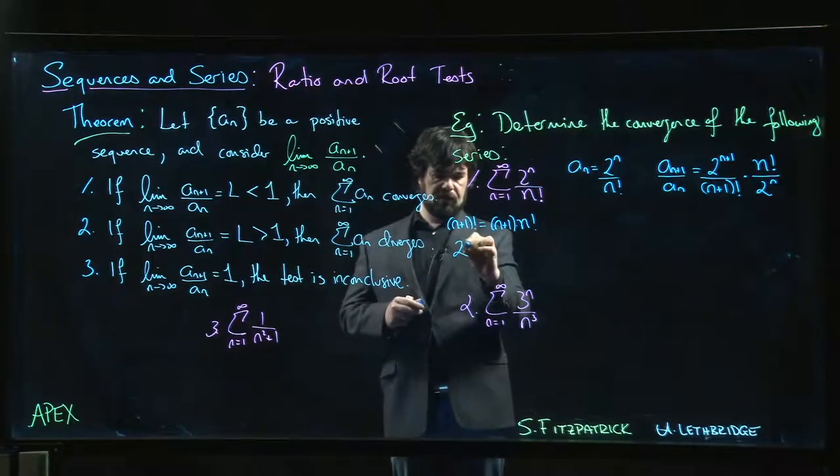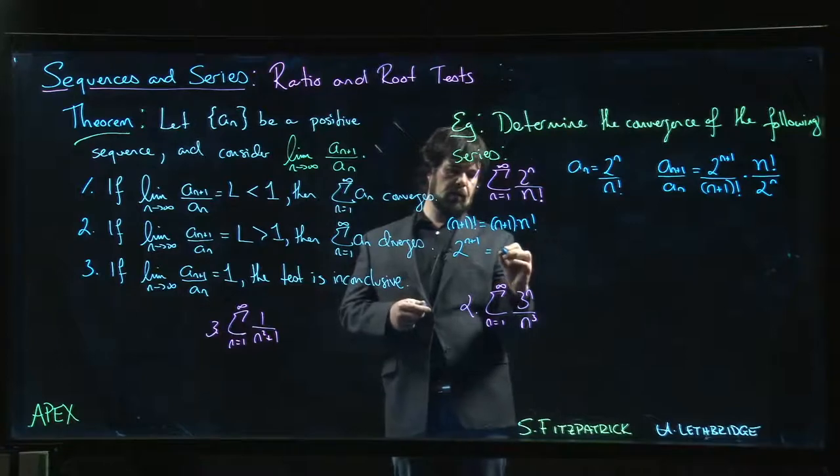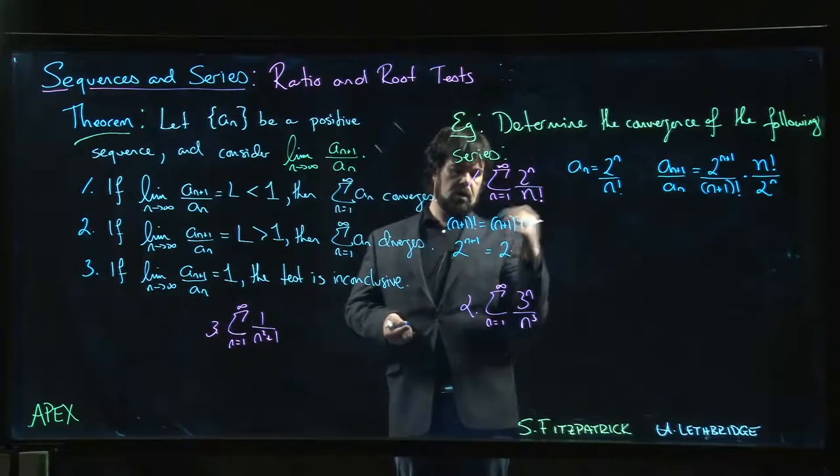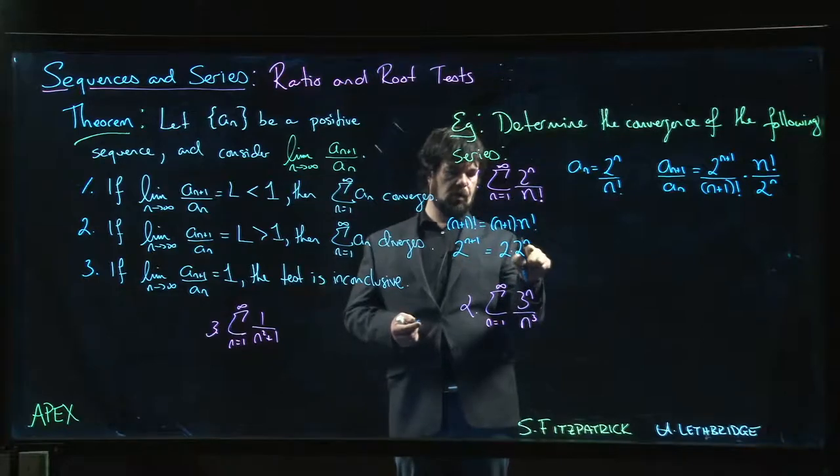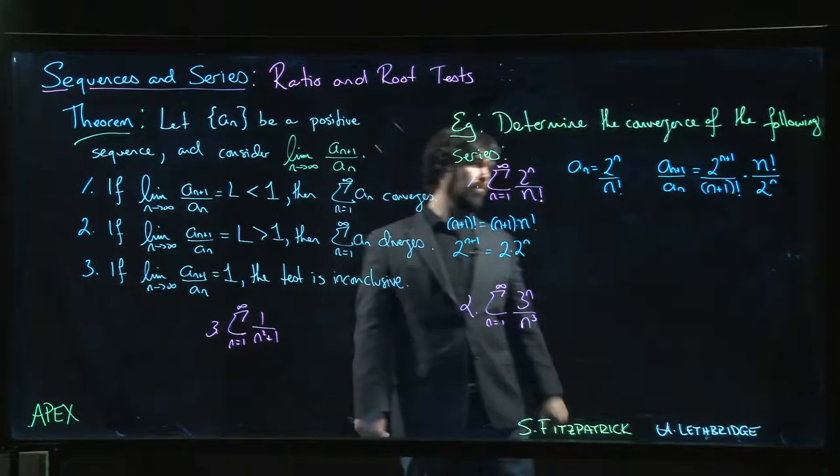Two to the n plus one, we can always write as two times two to the n. Laws of exponents, n plus one. So two to the n times two to the one. There we go.